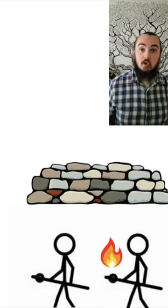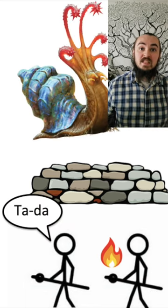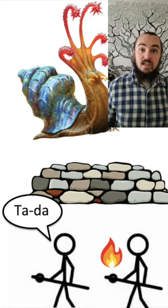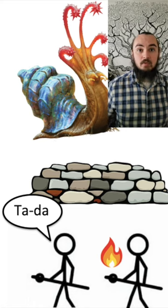One caster holds their action to cast Scorching Ray at 5th level. The other casts Conjure Elemental, conjuring a Flail Snail from Monsters of the Multiverse, 90 feet away, behind three-quarters cover.